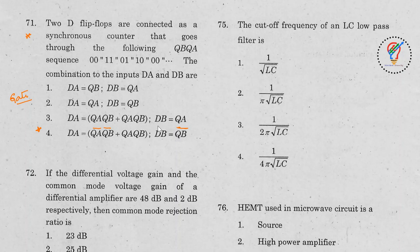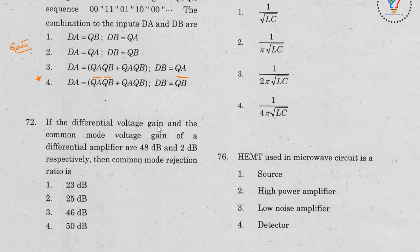Question 72: If the differential voltage gain and the common mode voltage gain of a differential amplifier are 48 dB and 2 dB respectively, find the common mode rejection ratio (CMRR). The basic formula for CMRR is differential gain divided by common gain.